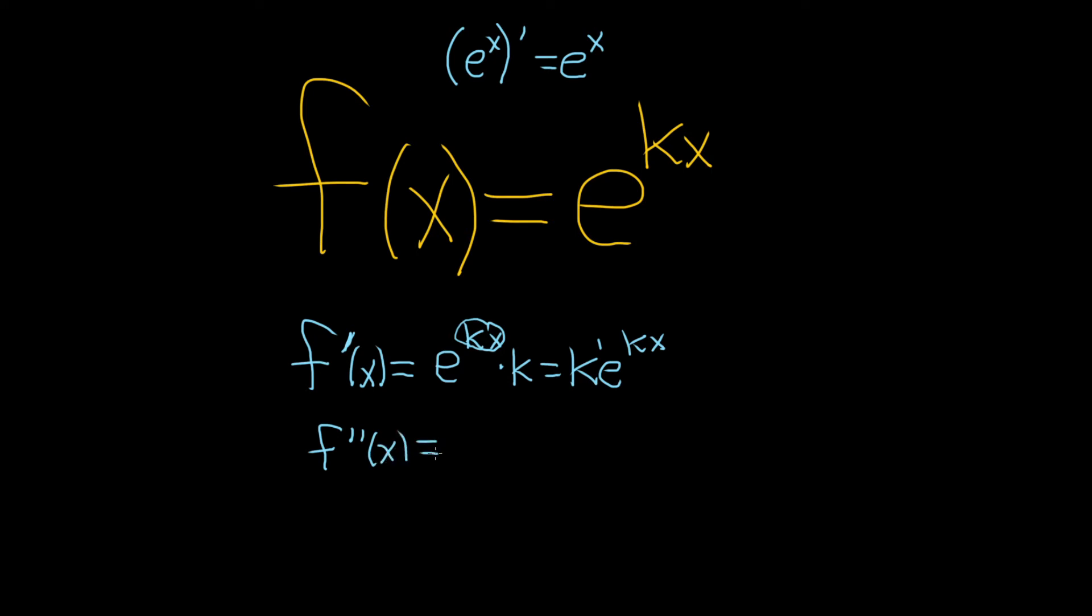F double prime of x. So now the k again hangs out - it's a constant. So it just stays there. And the derivative of e to the kx is e to the kx times the derivative of the inside, which again is k. Now we can multiply the k's, so we get k squared e to the kx. Ah, it's working. Look at that. Second derivative, there's a 2.